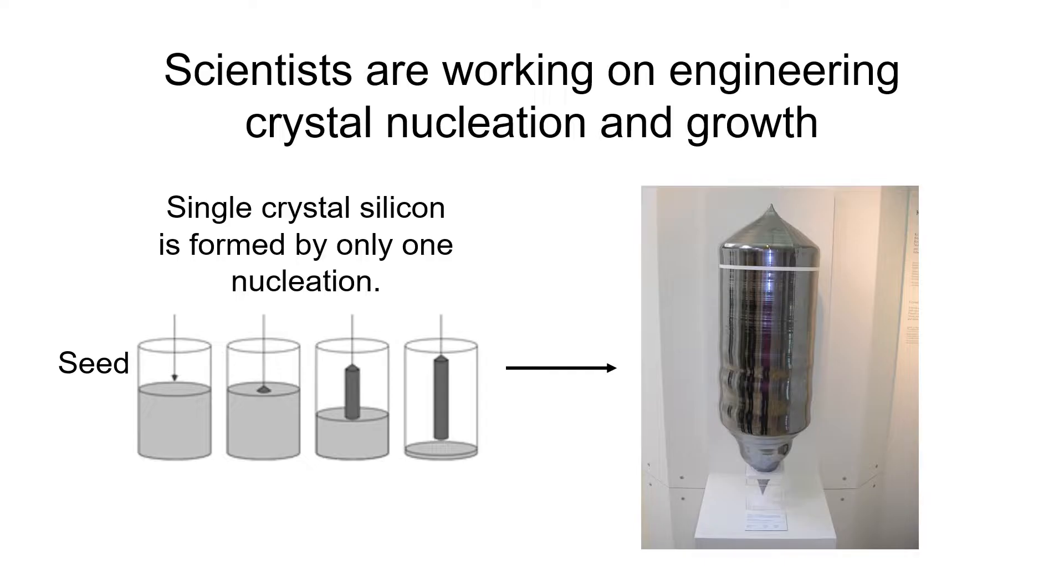And scientists are working on engineering the crystals in a better way. Let's go back to silicon. Electronics requires a very pure and perfect single crystal of silicon, which means the whole huge crystal should only grow from one nucleation. To achieve this, scientists have worked years to better control it, and the process is slow and expensive.